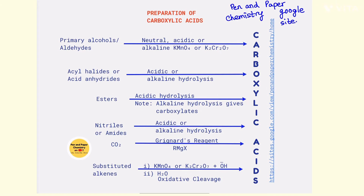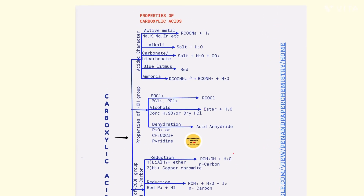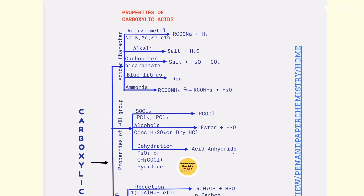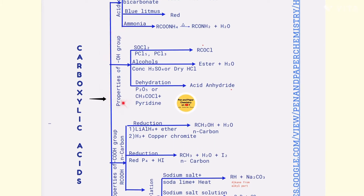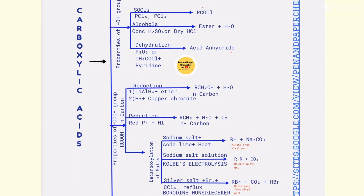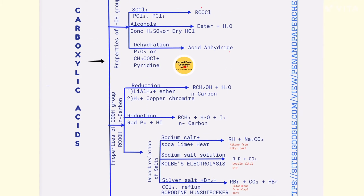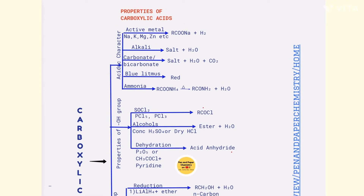Today we are starting with the properties of carboxylic acids. Here's the flow chart, and if you see it carefully, the properties have been categorized into four areas. First is the acidic character of carboxylic acids. Second is the properties of the OH group. Third is the properties of the COOH group as a whole. And fourth is a specific property limited to carboxylic acids with an alpha hydrogen atom.